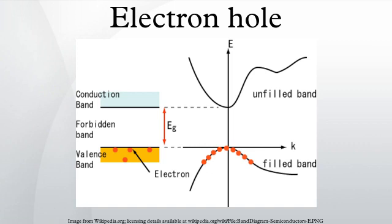In solid-state physics, an electron hole is the absence of an electron from an otherwise full valence band. A hole is essentially a way to conceptualize the interactions of the electrons within a nearly full system which is missing just a few electrons. In some ways, the behavior of a hole within a semiconductor crystal lattice is comparable to that of a bubble in an otherwise full bottle of water.